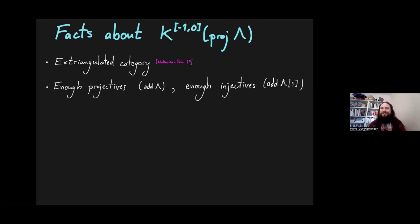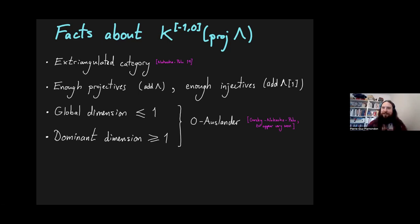With this X-triangulated structure, it has enough projective objects. These are just the projectives, concentrated in degree zero, and also enough injective objects. These are the shifted projectives, or the projectives concentrated in degree minus one. It has global dimension at most one. Everyone has projective dimension at most one in there. It also has dominant dimension at least one, which has led Koenig, Nakaoka, and Palu to call these categories zero Auslander in a preprint that will very soon appear on the archive. Check it out.